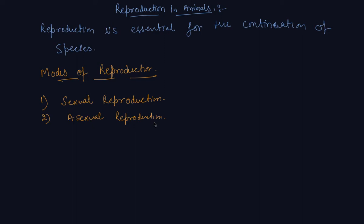In sexual reproduction, I hope you remember that plants which reproduce sexually have male and female reproductive parts, which we studied in class 7. In animals also, males and females have different reproductive organs. Like plants, the reproductive parts in animals produce gametes that fuse to form a zygote, which we will discuss further in this chapter.